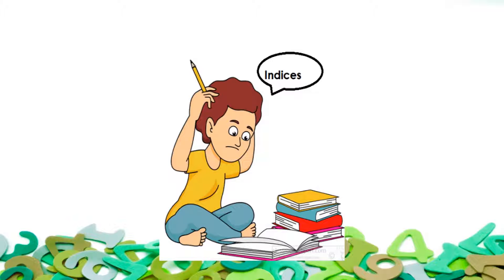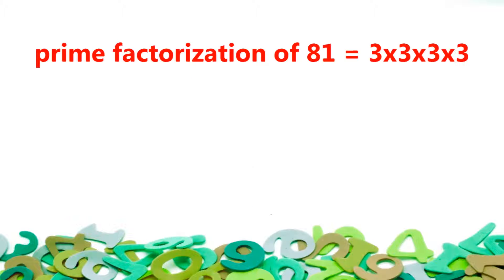Let us begin our topic with an example. If we have to give the prime factorization of 81, it is 3 into 3 into 3 into 3. That is, if we multiply 3 with itself 4 times, we get 81.